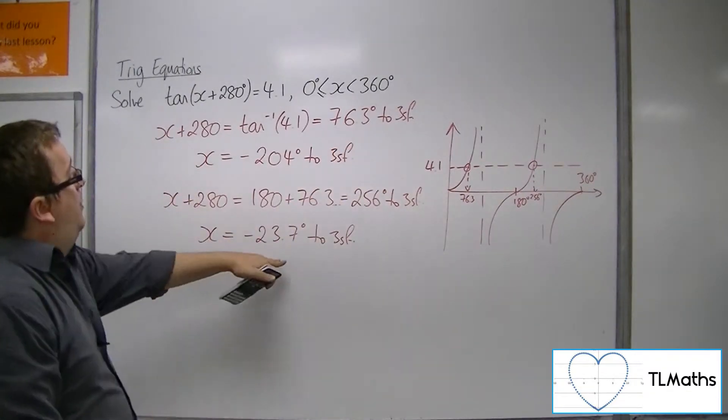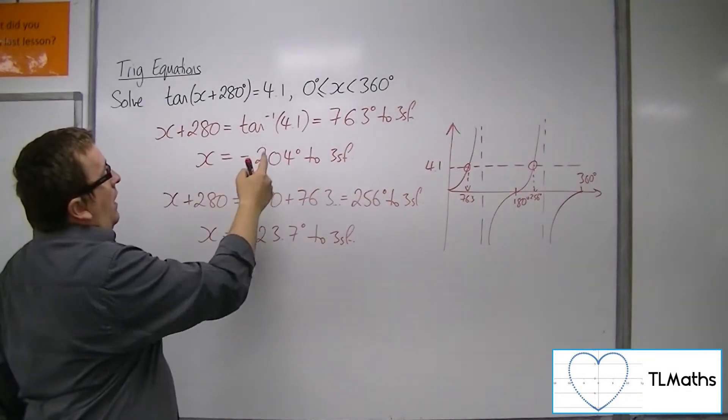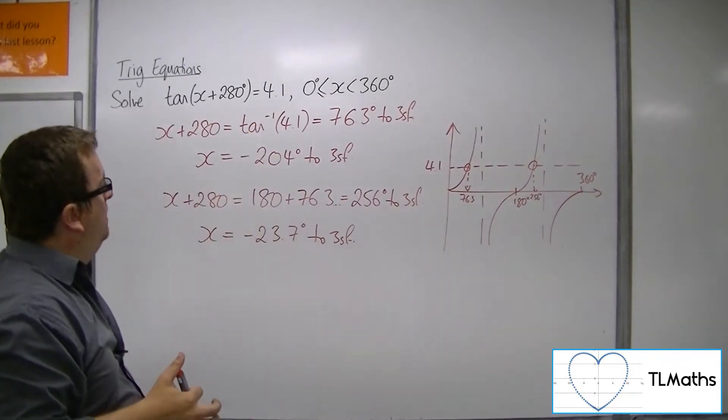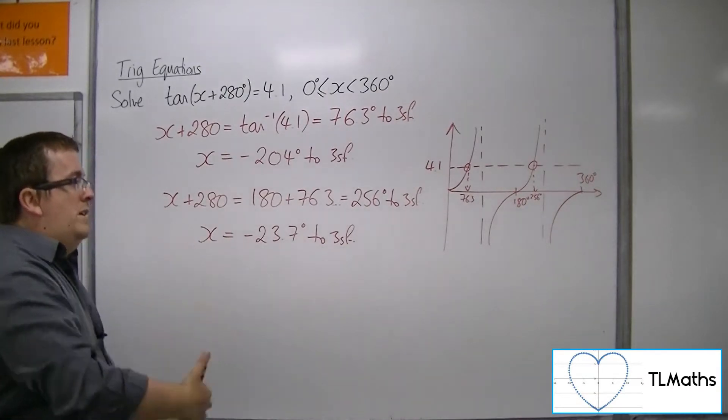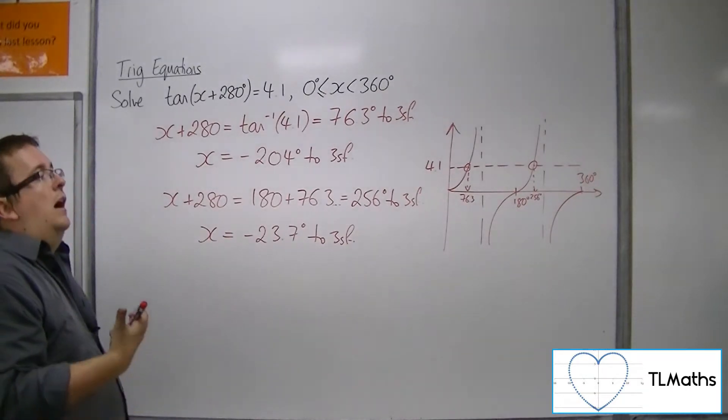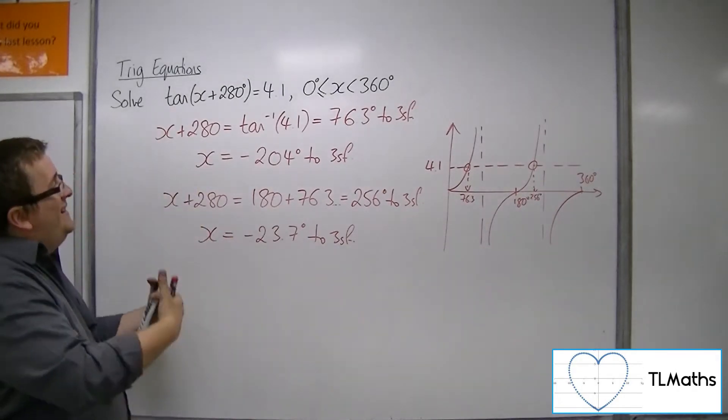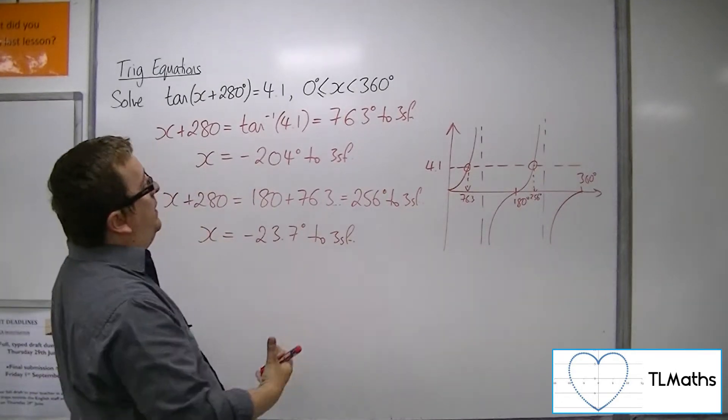Now, clearly, both of these solutions are out of range. OK, so what I need to do is I need to progressively add on 180 degrees, OK, the period of tan, to get solutions that are between 0 and 360.